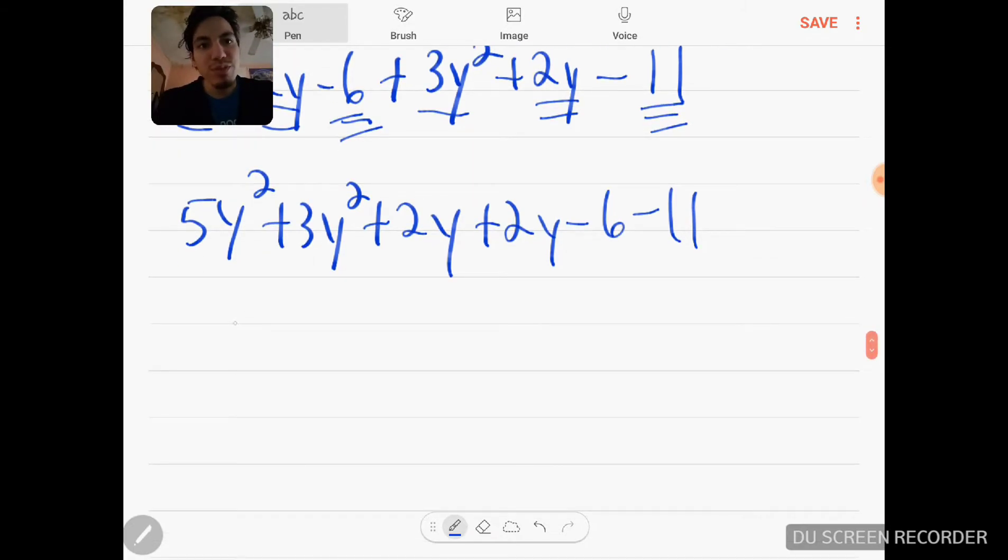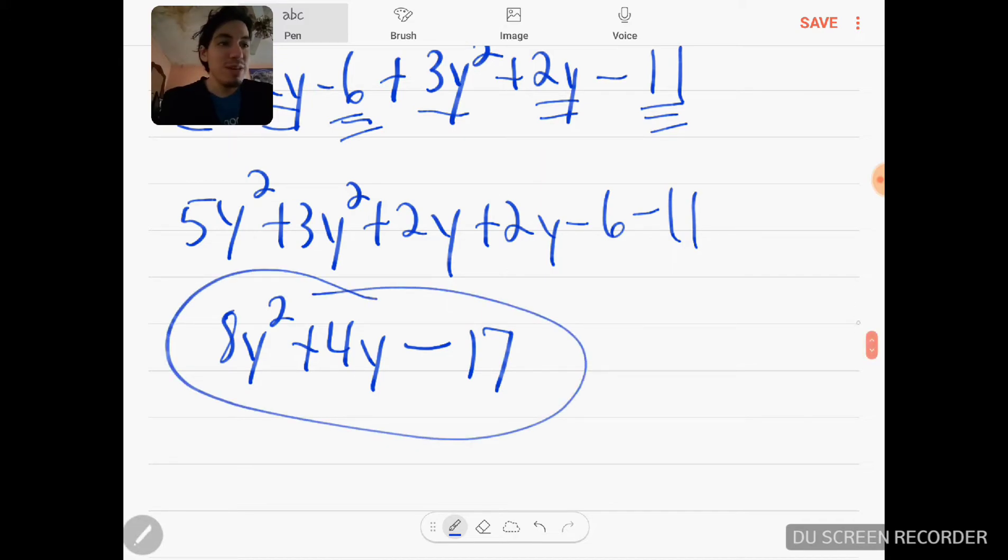So 5y² plus 3y² gives me 8y². 2y plus 2y is 4y. Now, this is what a lot of students forget: they feel like when they see negative 6 minus 11, they might put negative 5 as their answer. No—you're not subtracting. Subtraction doesn't make any sense. Remember: when the signs are the same, you keep the sign and add the numbers. Remember this: you apply that rule when you clearly see a minus sign and another minus sign. That means you have to keep this sign and add the numbers, and that will be your answer for that problem there.